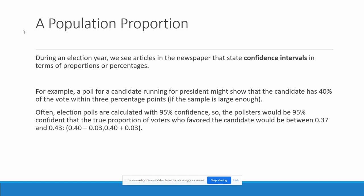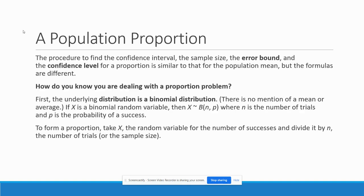We're not given a single true estimate of the percentage — we're given a range, and a range can cover you in a lot of different circumstances. The procedure to find the confidence interval, the sample size, the error bound, and the confidence level for a proportion are very similar to those for the population mean.